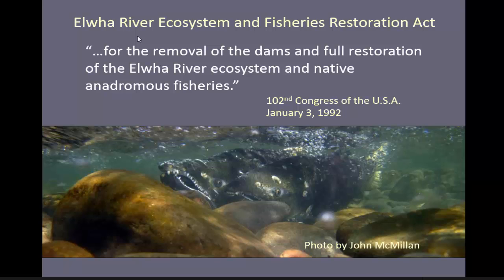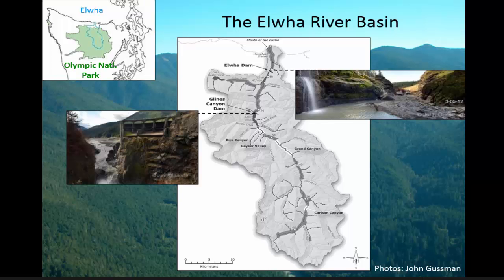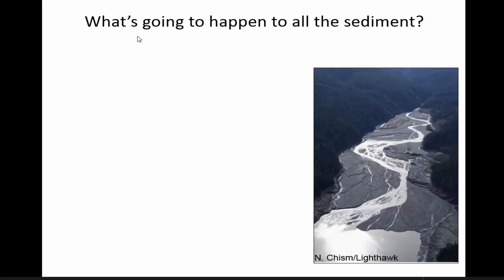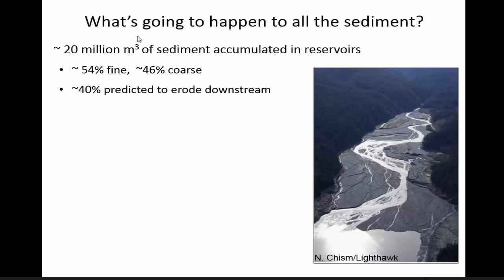As mentioned, the Elwha Act was passed in 1992 for the removal of the dams and full restoration of the Elwha ecosystem and native anadromous fishes. Twenty years later, we started actually removing the dams. This photograph shows what the dam removal looked like in March of 2012, and this is November of 2012 at Glines Canyon. Before talking about the dams themselves, I want to address the biggest issue surrounding this dam removal: what's going to happen to all the sediment. About 20 million cubic meters of sediment accumulated in the reservoirs from when they were built to 2011.